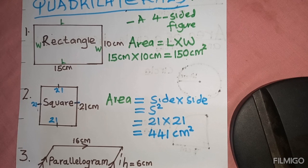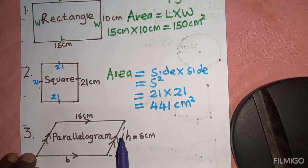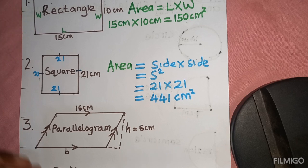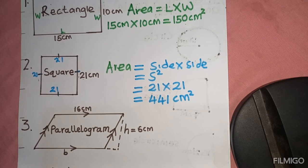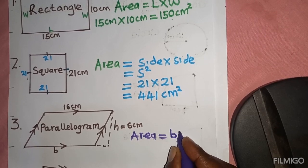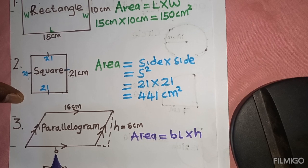We move on to the area of a parallelogram. A parallelogram is another four-sided figure which looks like a twisted rectangle — as if a rectangle was pressed on the upper side to get another shape. In a parallelogram, we get the area using the formula: area equals base length times height. The base length is denoted by letter B.